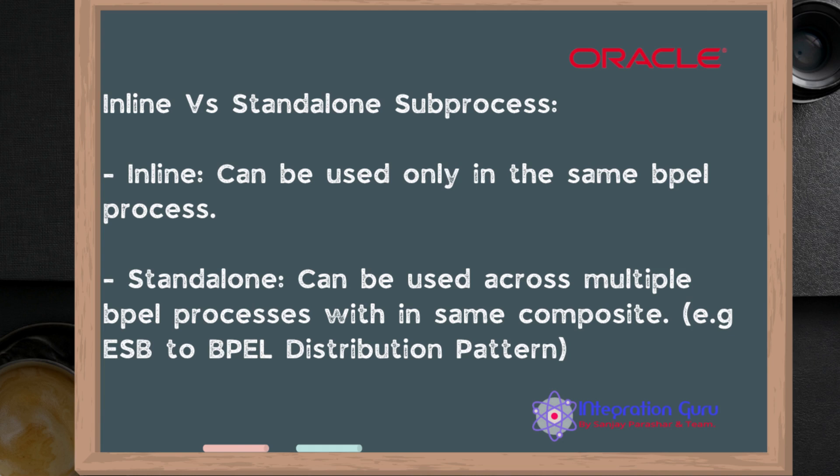A standalone subprocess can be used by multiple people processes within one composite. The most common use case is: imagine you have a SOA composite where the input message first goes to a mediator, and the mediator is connected with three different people processes. Based on certain criteria, the mediator sends the request to one of the people processes, and all those people processes have common code. That common set of activities and business logic can be written in a standalone subprocess, which all three people processes can call — enabling great code reuse.